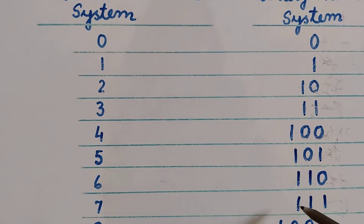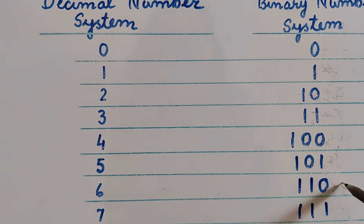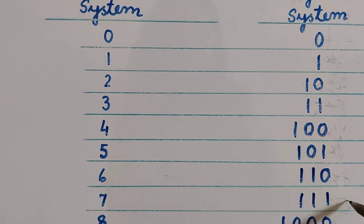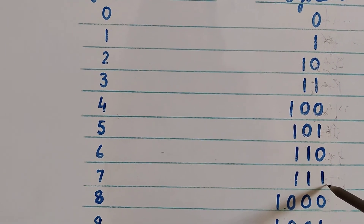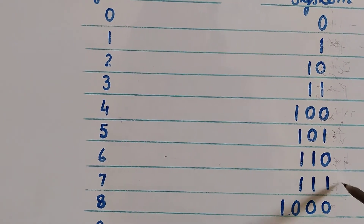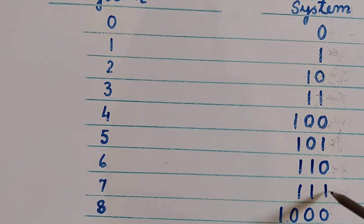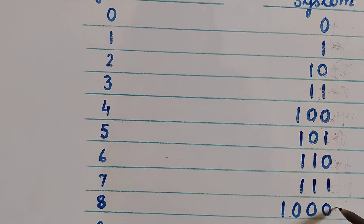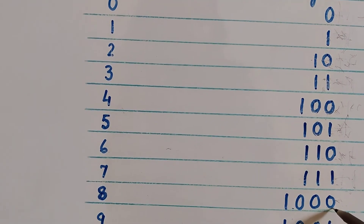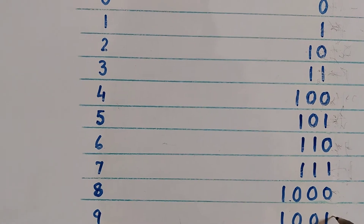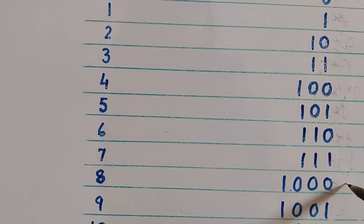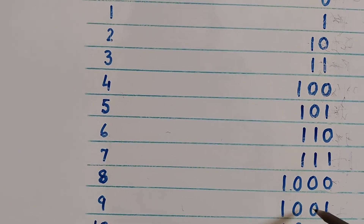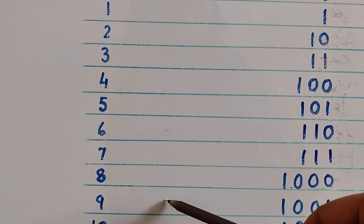Decimal 7 is written as 110 plus 1, which gives 111. So decimal 7 in binary is 111. Decimal 8 is obtained by adding 1 to 111: 1+1+1 with carries gives 1000. So decimal 8 in binary is 1000. Adding 1 to 1000 gives 1001, so the binary value of decimal 9 is 1001.